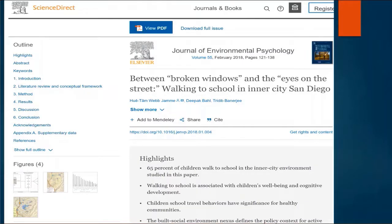Consider, for example, this article from the Journal of Environmental Psychology. We see on the left-hand side all of the sections are listed, and they are links so that one can go directly to the literature review if one wants to. We also see that there is acknowledgments and also an appendix of supplementary data.